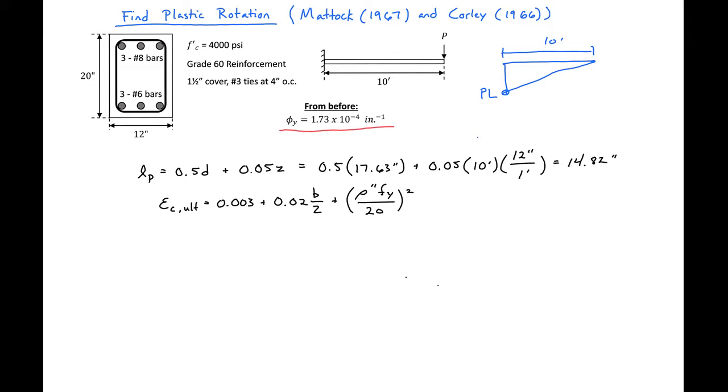Next we need to find our strain at ultimate. In order to do this we'll use this expression by Matic and Corley for our ultimate strain which has it equal to 0.003 plus 0.02 times B, which is just our base width, 12 over Z, which we found above, plus rho double prime times Fy over 20, all squared. We need to find our rho double prime value first.